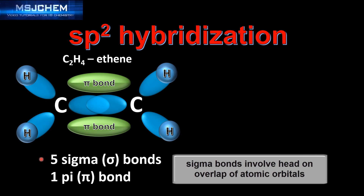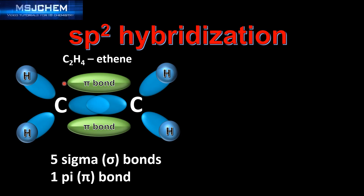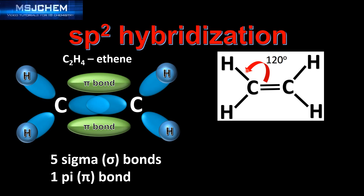In the ethene molecule, there are a total of five sigma bonds and one pi bond. The sigma bond between the two carbon atoms is composed of the overlap of two SP2 hybrid orbitals. The sigma bonds between the carbon and hydrogen atoms are composed of the overlap between an SP2 hybrid orbital and an S orbital from the hydrogen atom. The pi bond, which forms part of the double bond between the two carbon atoms, is composed of the sideways overlap of the unhybridized P orbitals.